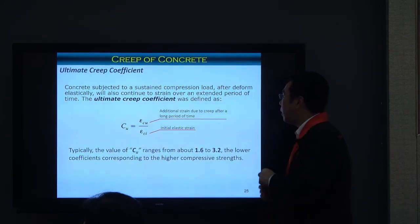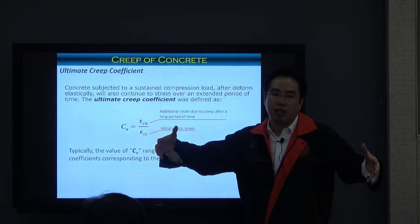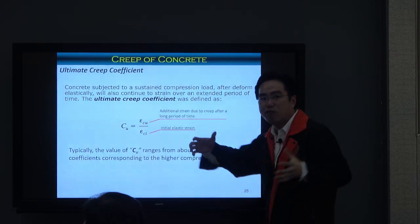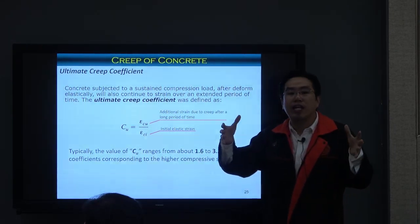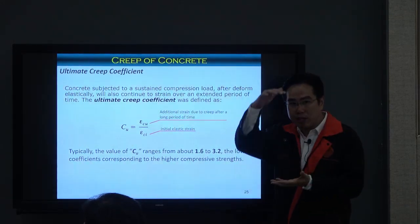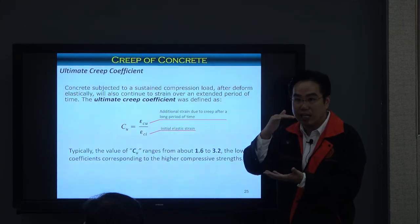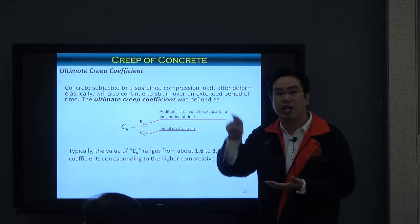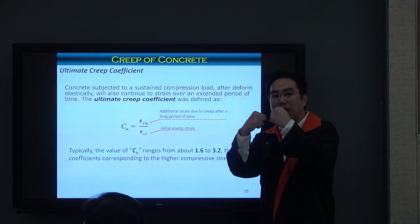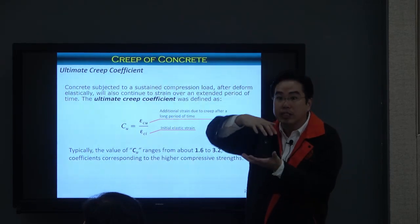The second time-dependent factor is creep. The big difference between creep and shrinkage is that if concrete does not resist any force, it will not creep — it will shrink but not creep. Creep is deformation of concrete when it is subjected to stress. To understand creep, we classify deformation into instantaneous deformation (stress divided by Young's modulus, occurring immediately when force is applied) and time-dependent creep deformation, which is a continuous gradual deformation due to water molecules moving under sustained load.